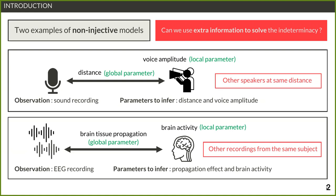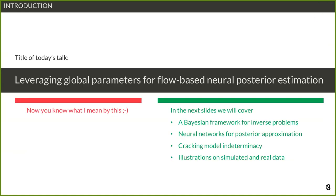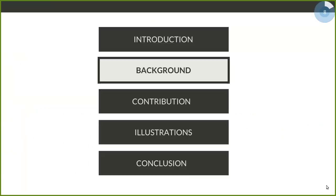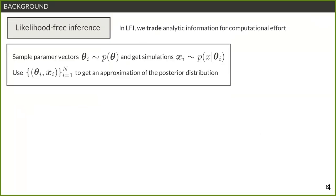Going back to the title of my talk, you now know what I mean by 'leveraging global parameters.' The idea of using flow-based neural posterior estimation — I admit it looks at first like a string of popular machine learning keywords, and indeed they are. I'll try to be more precise and show how we use these tools to achieve our results. Since most people here know these tools better than me, I'll just be very brief and give you consistent notation.